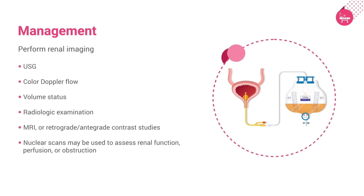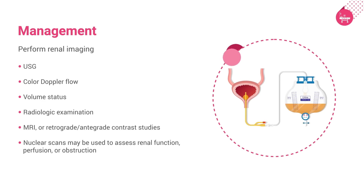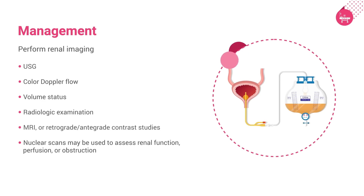Perform renal imaging. Abdominal ultrasound or non-contrast CT scan are useful to diagnose renal and post-renal oliguria. USG may reveal echogenic or small kidneys with loss of corticomedullary differentiation, indicating chronic kidney disease. Color Doppler flow can assess renal perfusion and rule out thrombosis. Volume status can be assessed by checking the diameter and collapsibility of the inferior vena cava. Radiologic examination detects renal stones and pelvic fractures. MRI or retrograde/antegrade percutaneous contrast studies may delineate the site or nature of obstruction. Nuclear scans may assess renal function, perfusion, or obstruction.